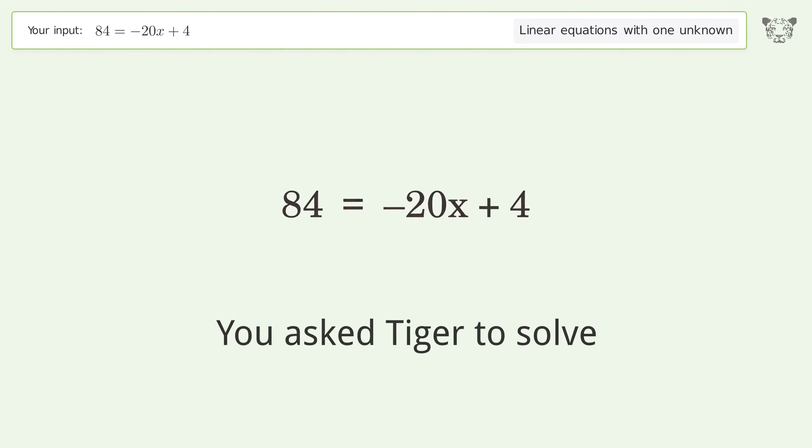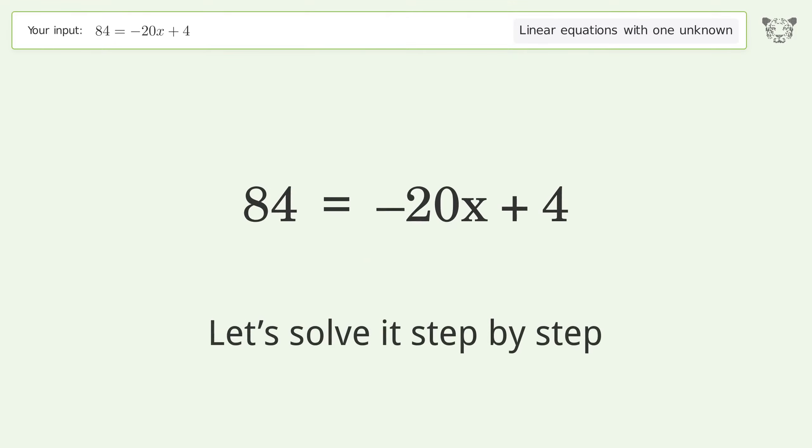You asked Tiger to solve this, which deals with linear equations with one unknown. The final result is x equals negative 4. Let's solve it step by step. Swap sides.